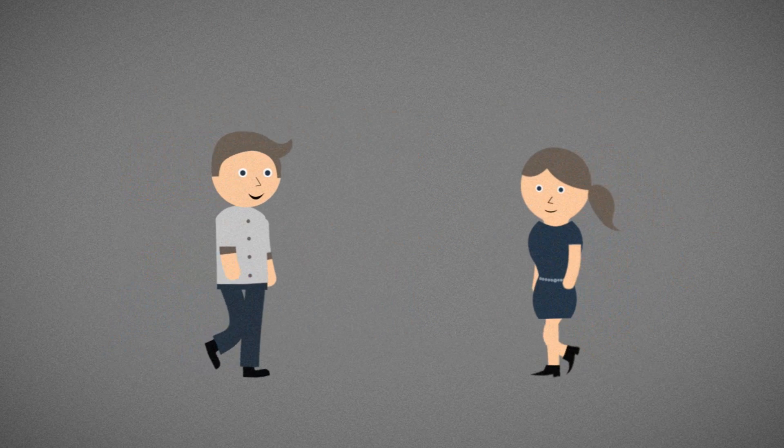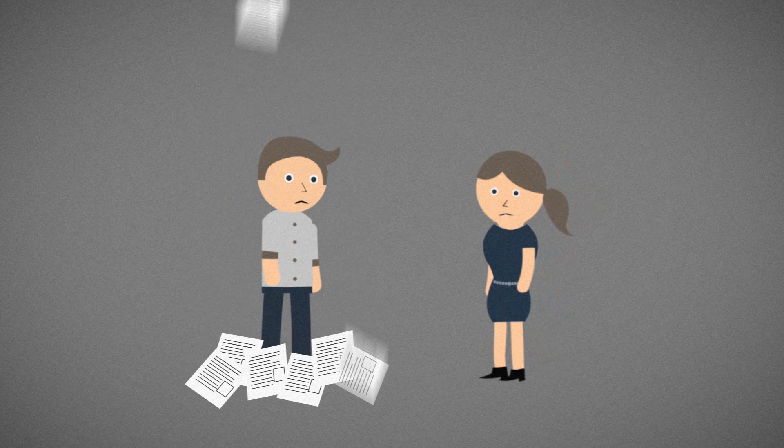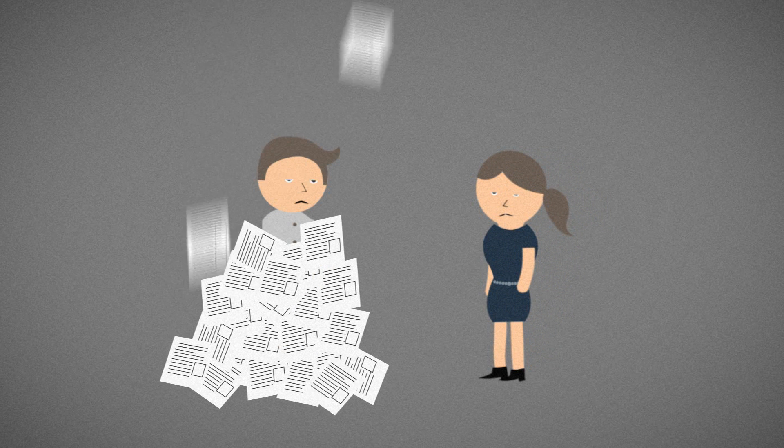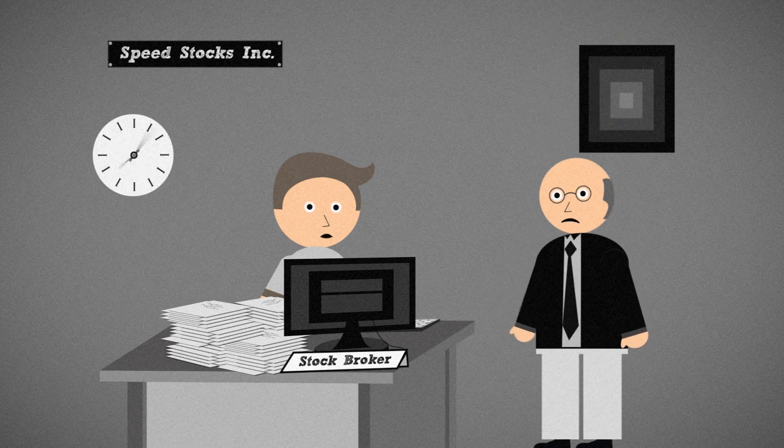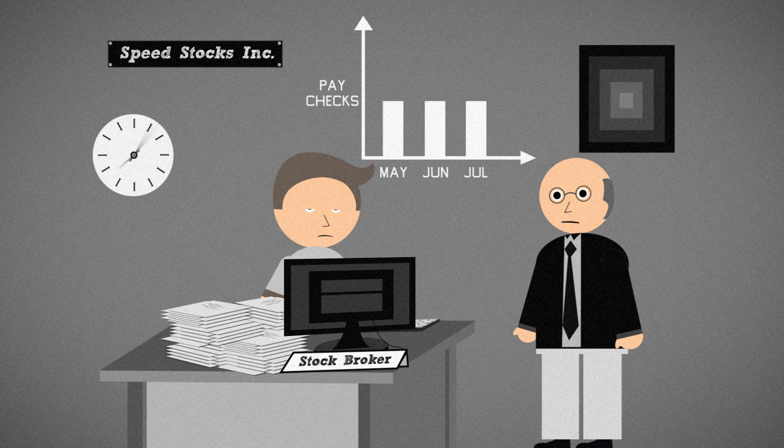Jeff really wants to spend more time with his girlfriend, but each day, the work seems to pile up before him. He's not able to organize his work. He's not able to meet his deadlines. He's not able to satisfy his boss, and his paychecks stay the same.